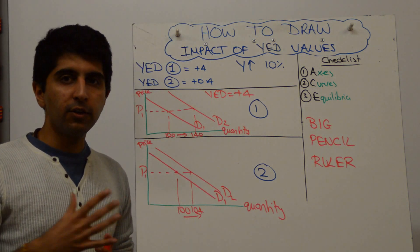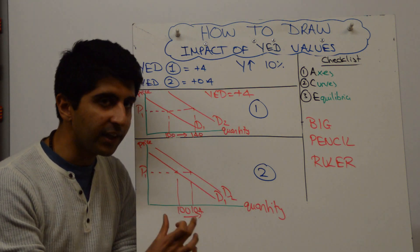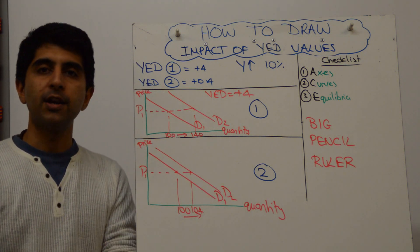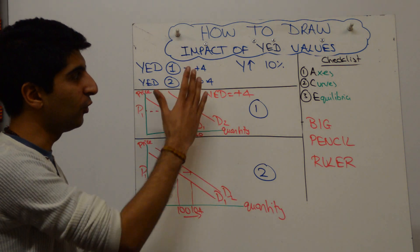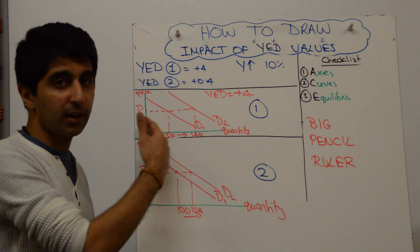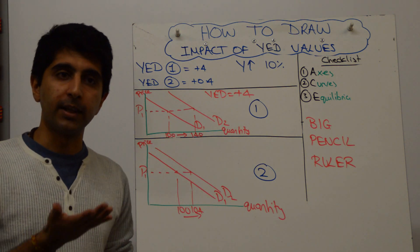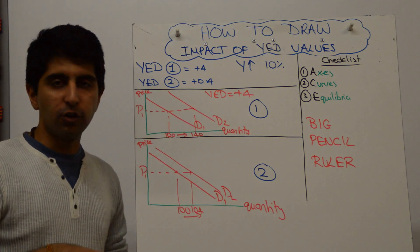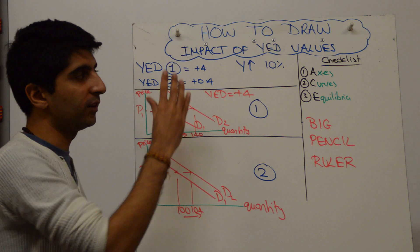So what you're trying to show the examiner here is that using figures, you can show the impact of a YED value. So this is for a normal good. For an inferior good, so if I made these negative, then the demand curve will be shifting to the left with those rising incomes. So you can do whatever you want to do as long as you know what the figure is.